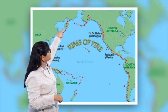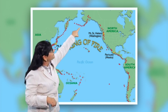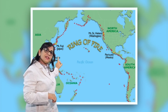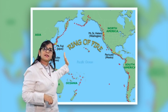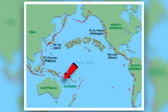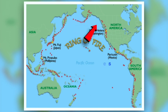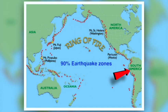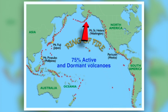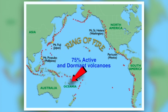You can see this map of the Pacific Ring of Fire surrounding the Pacific Ocean. These are the junctions where two plates converge with each other. This Pacific Ring of Fire has about 90% of the world's earthquake zones and 75% of the earth's active and dormant volcanoes.